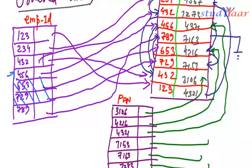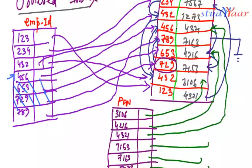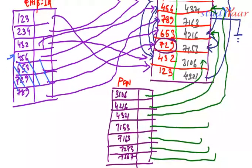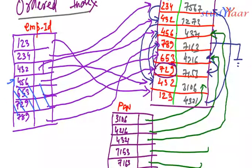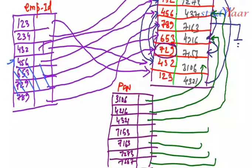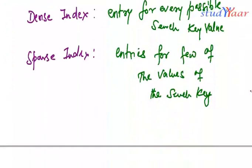Now in order to find 729, I would find the record which is just smaller than 729. So I would go to the record containing the 456 search value. From 456, I would go to this record and I would follow my pointers. So 456 is pointing to 653 and 653 is pointing to 729 and in this way I find my entry.